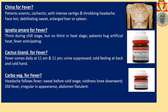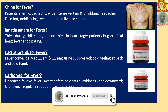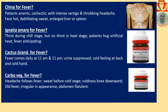Ignatia Amara for Fever. There is thirst during the chill stage but no thirst in the heat stage — note this important characteristic. The patient hugs artificial heat, that is fire, and enjoys its warmth. The fever is 'anticipating,' meaning it comes earlier each day — if today it comes at 10, tomorrow it will come at 8, and the next day earlier still. The fever is progressively coming forward day by day.